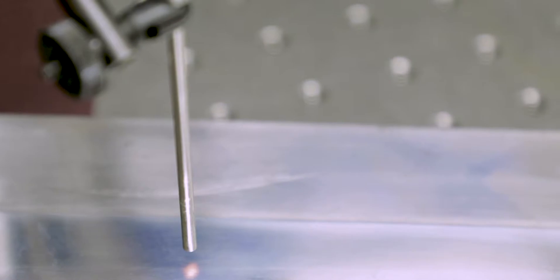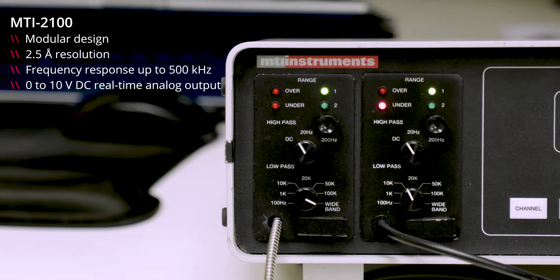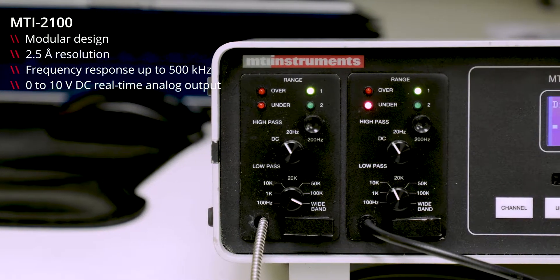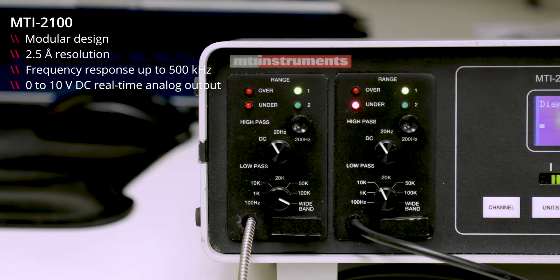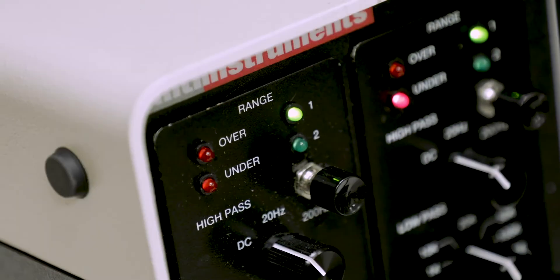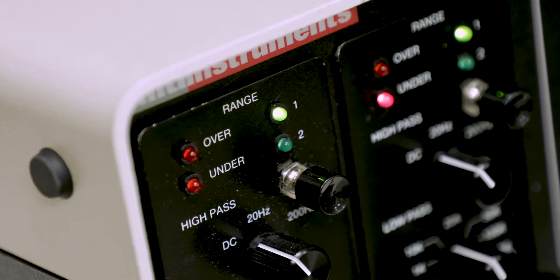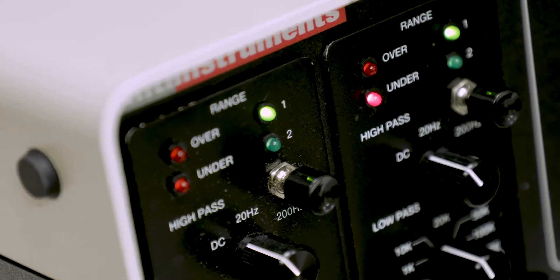The MTI 2100 is a high-resolution non-contact displacement sensor based on fiber-optic reflectance technology. It is designed for key engineering applications, such as quality control and process automation.